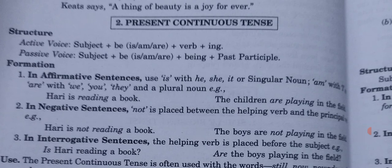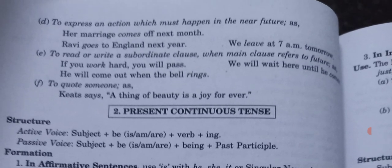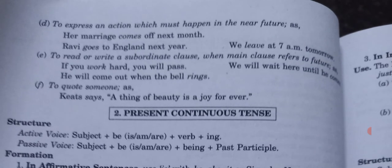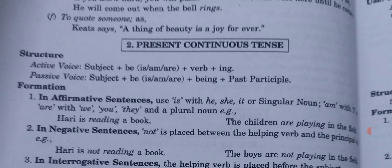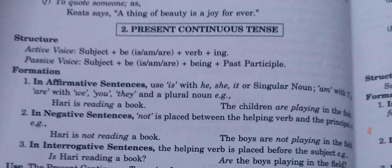Now present continuous tense. The structure is: subject plus is/am/are plus V1 plus -ing. In passive voice, the same is/am/are is used with 'being' plus past participle — the third form of the verb.